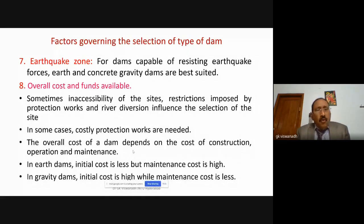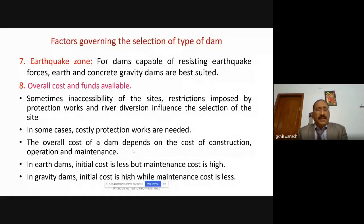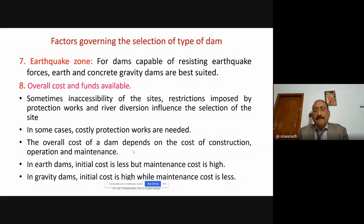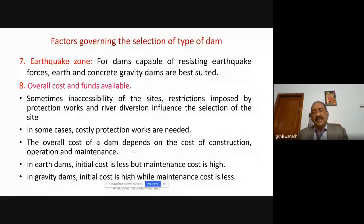Overall cost is another factor — how much fund is available. Inaccessibility of sites and restrictions imposed by protection works under river diversion also influence site selection. The overall cost of the dam depends on construction, operation, and maintenance. In an earth dam, initial cost is less but maintenance cost is very high. In a gravity dam, initial cost is high but maintenance cost is less.